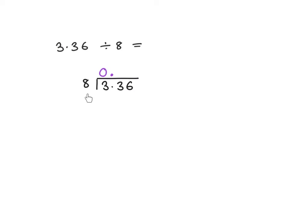And then we ask ourselves: how many 8s go into 33? Well clearly in 33 there are 4 lots of 8s that go into 33, because 8 times 4 is 32. And the remainder — 33 minus 32 — is just 1. Now I bring this 6 down. And then we ask ourselves: how many 8s go into 16? Well clearly in 16 there are exactly 2 lots of 8, because 8 times 2 is 16, and so there are no remainders. We stop here.